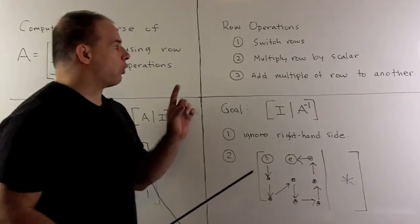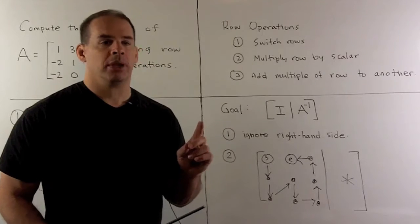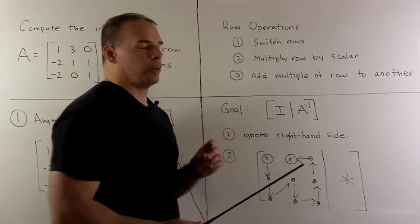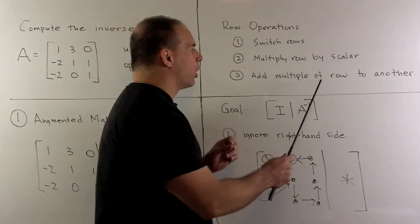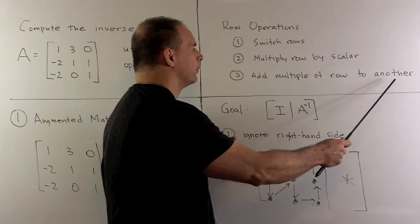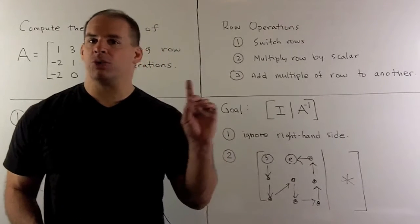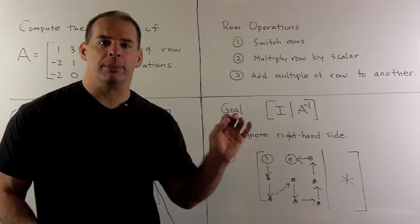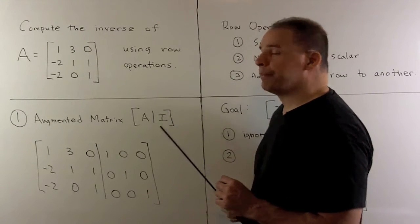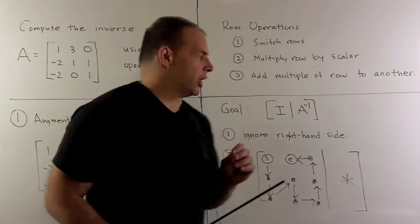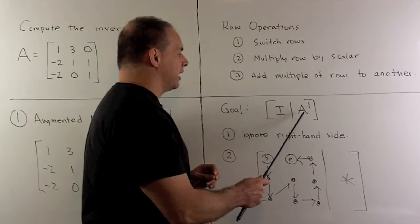Now, our row operations, remember, I can switch any two rows, multiply any row by a scalar, and add a multiple of any row to another row. With these row operations, our goal is going to be to convert this augmented matrix, A slash I, to the augmented matrix I slash A inverse.